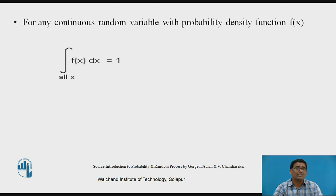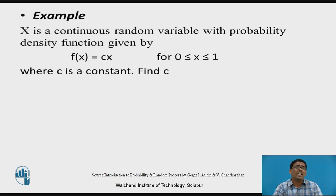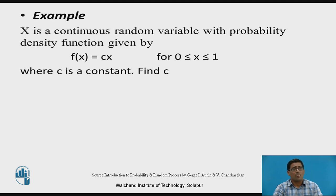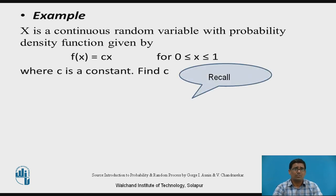For a continuous random variable with probability density function f(x), the equation is: the integral of f(x) dx over all x values equals 1. For continuous random variables we use integration, because unlike discrete random variables where we take only countable values, for continuous random variables we take values over a range — that's why integration is used.